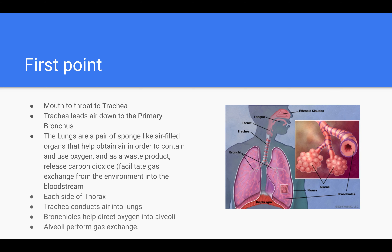A little more info about the lungs: it starts from the mouth to the trachea, and then down to the primary bronchus where it leads the air. The lungs are a pair of sponge-like, air-filled organs. They obtain air to use oxygen and produce a waste product — releasing carbon dioxide out to the environment.